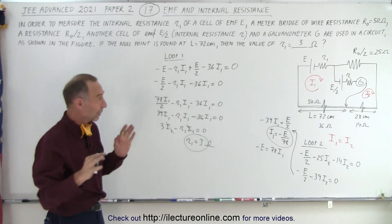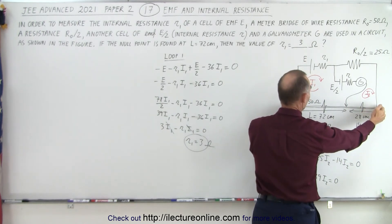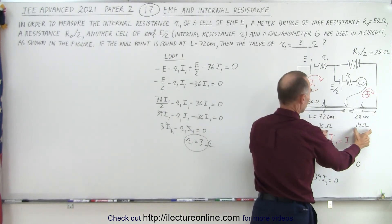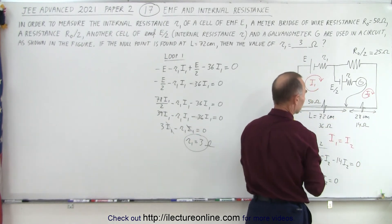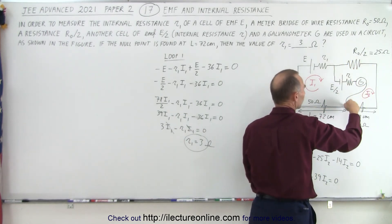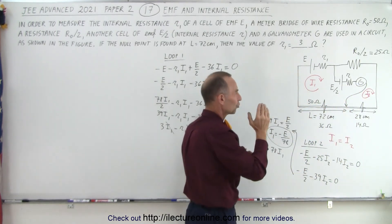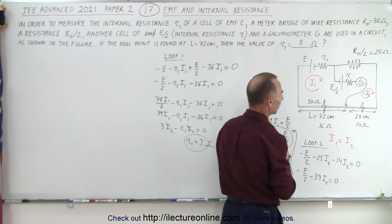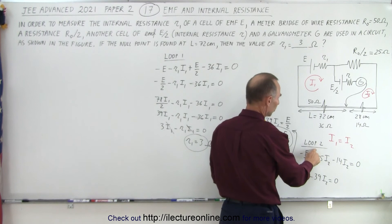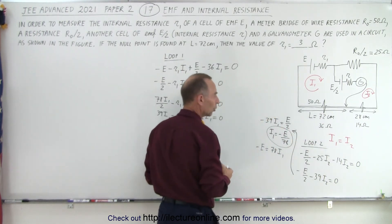So again, the way we did that was to realize that this was a resistor bar of 50 ohms divided into two lengths, a length of 72 centimeters and 28 centimeters, so we divide the resistance appropriately according to the length. Realizing that this is 25 ohms and that there's no current through the central branch here because we set the null point, that means there's no current going through the galvanometer. We only have a voltage drop due to the cell right there.